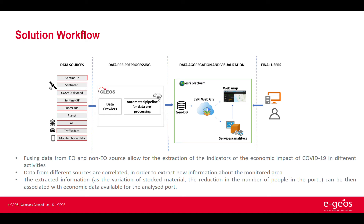The workflow implemented to compute these indicators starts from crawling data from both Earth observation and non-Earth observation sources. Data is then correlated to extract new information about the monitored area. Finally, the extracted information can be associated with economic data available for the analyzed port in order to give a complete analysis of the area monitored. This analysis is then visualized in a web map to allow easy access to it.